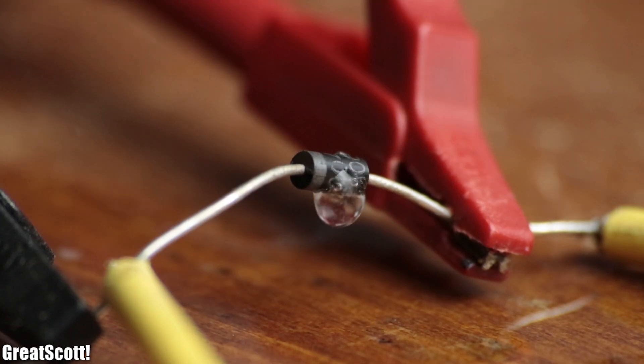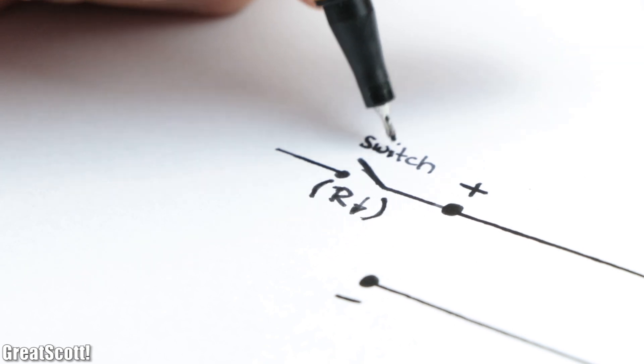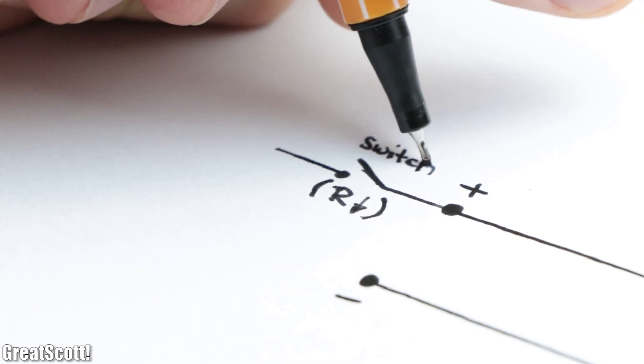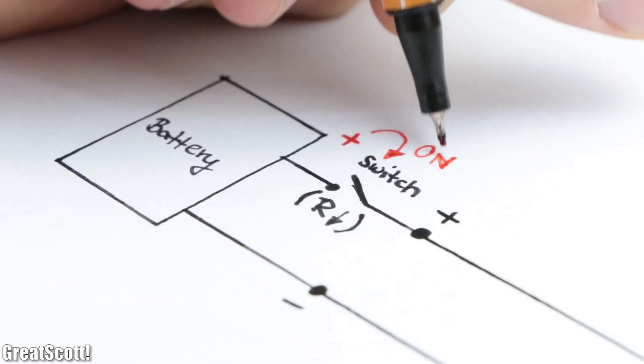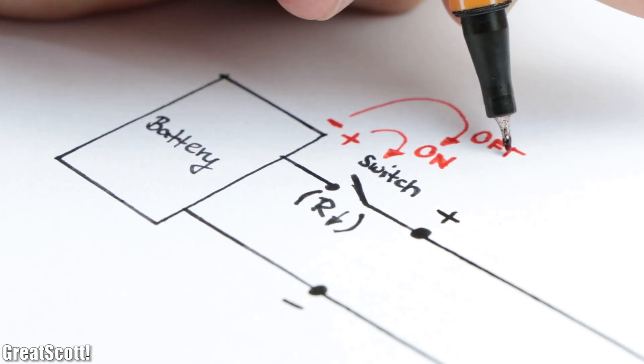So what is the best reverse voltage protection, you might ask? Well, through our earlier circuits, we know by now that we need some sort of switch with a very low resistance that turns on if the voltage is applied correctly and turns off if it is connected the wrong way.